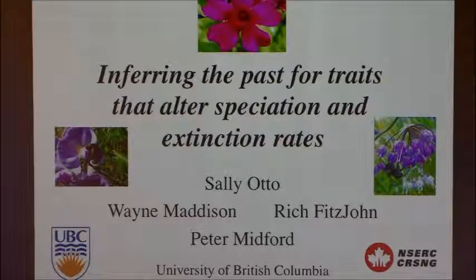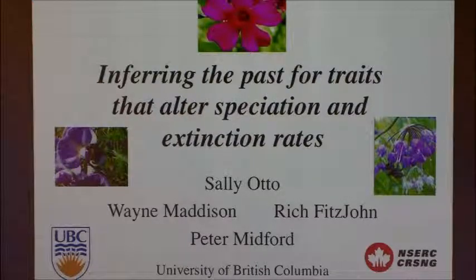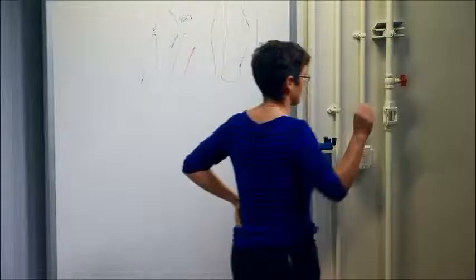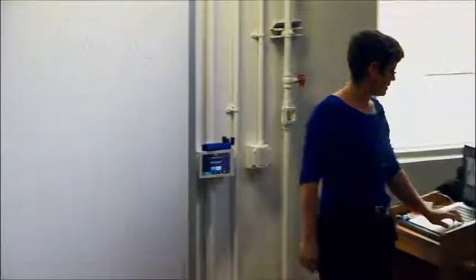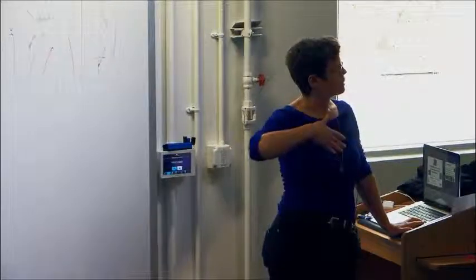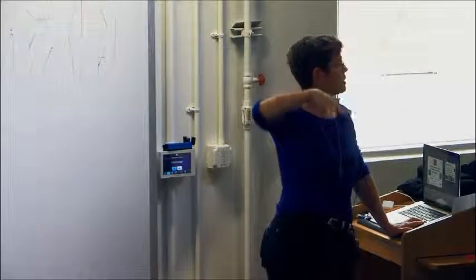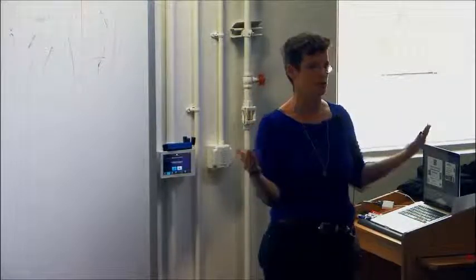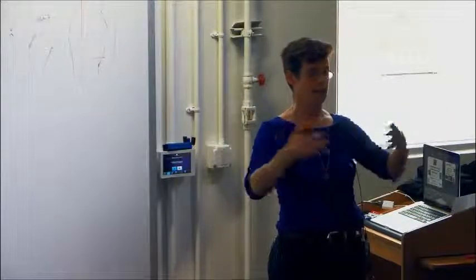I'm going to talk most of the time at a different level, discussing species trees, extinction, and speciation rates. But I want to circle back to some of the issues that have come up in this workshop and look at population-level inferences at the end. For most of the talk, I'm going to be working at the species level. The talk comes out of a comparative literature that marries two different sorts of comparative questions we might want to ask when looking at the tree of life.